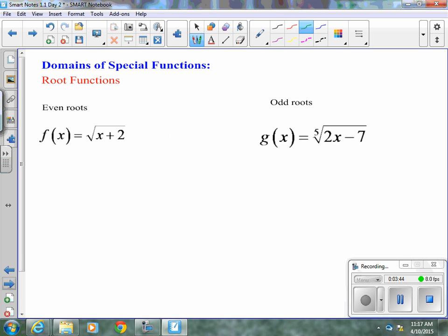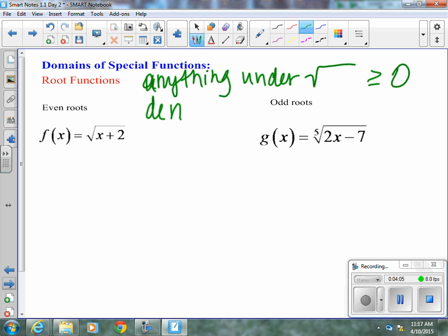So, moving on to domain, if you remember from pre-calc, we have two domain rules. One of our domain rules is anything under a radical has to be greater than or equal to 0. And our other rule is that the denominator can't equal 0. We will add to some domain rules as we go throughout this year in calculus, but for now that's all we need to know. So, even roots, we have a radical. Anything under a radical has to be greater than or equal to 0. So, for x, x is going to have to be greater than or equal to negative 2. So, our domain for f of x equals radical x plus 2 is negative 2 to infinity.